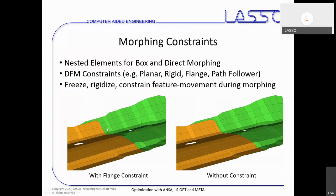Another constraint is the flange constraint. When we increase the width of the orange part without any constraint, we get intersections. With a flange constraint applied, the nodes are lifted slightly in order to avoid these intersections.